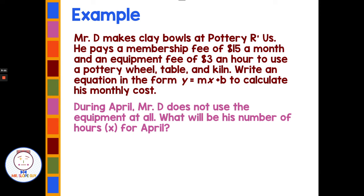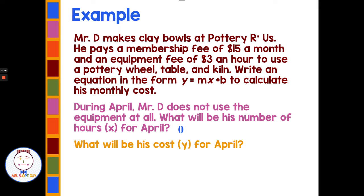Let's say during April Mr. D does not use the equipment at all. His number of hours x for April would be zero. And what will be his cost, or y, for April? If he doesn't use the equipment, he's not paying the equipment fee, but he still has the $15 a month membership fee. So his cost for April would be $15.